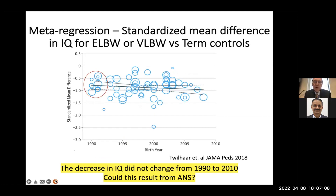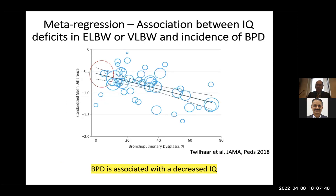Meta-regression analyses standardized to mean difference in IQ for extremely low birth weight or very low birth weight infants versus term controls show that the dark curve intercepts at about half a standard deviation below normal. Each blue circle represents a study, sized by patient number. Basically, there has been no improvement in IQ between 1990 and 2010. If you have BPD, you have a significant additional deficit in IQ.